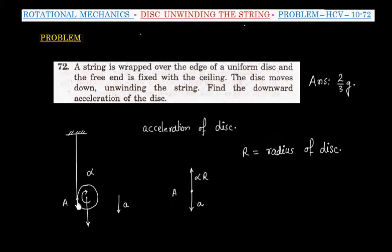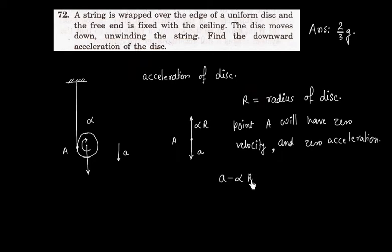Since this point is stationary, this will have zero velocity. We can also say this is a case of pure rolling, so the point of contact has zero velocity and zero acceleration. So we can write A minus alpha R equals zero, that is A equals alpha R.